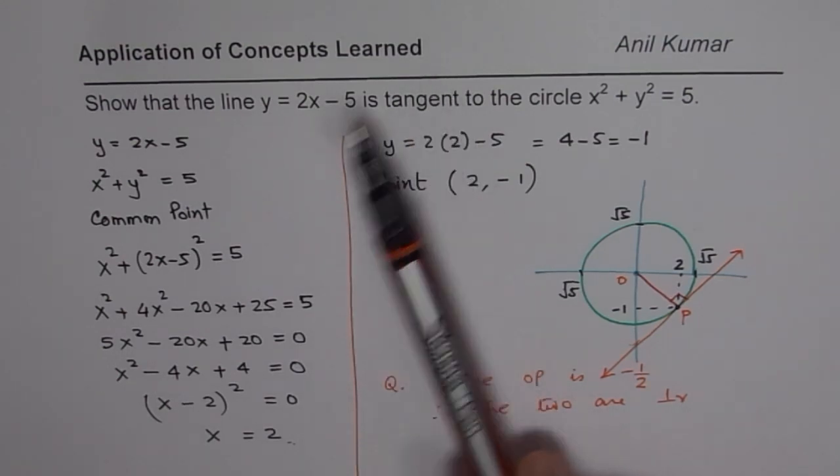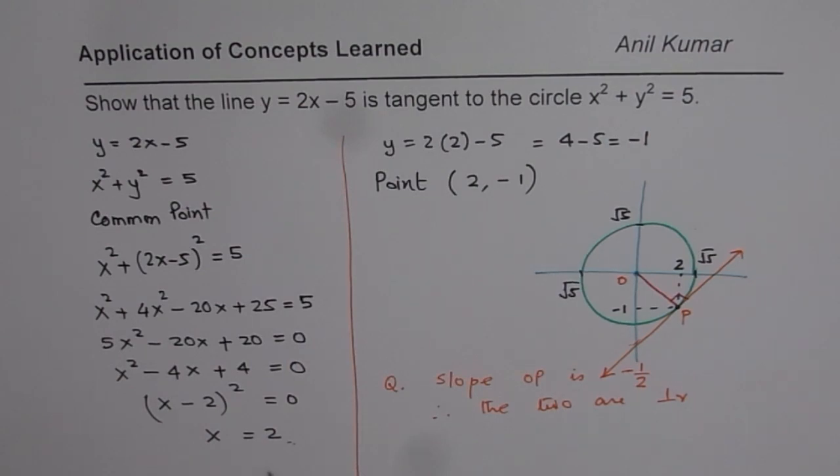Anyway, as far as the question is concerned, I hope you have understood the concept that if a line and a circle has only one point in common, in that case that line is tangent to the circle at that point. Thank you, and all the best.